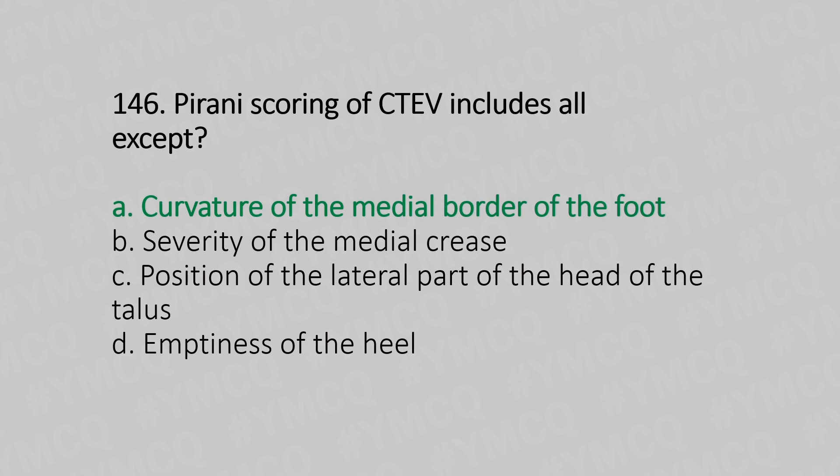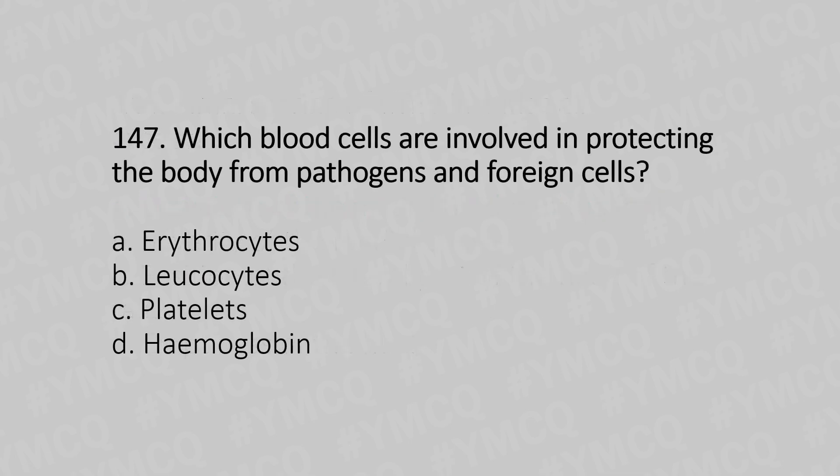Now let's move to question number 147. Which blood cells are involved in protecting the body from pathogens and foreign cells? Option A: erythrocytes. Option B: leukocytes. Option C: platelets. Option D: hemoglobin. And the answer is...